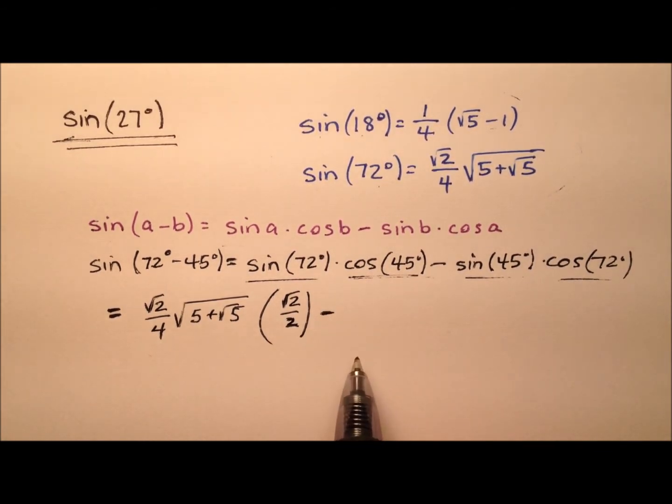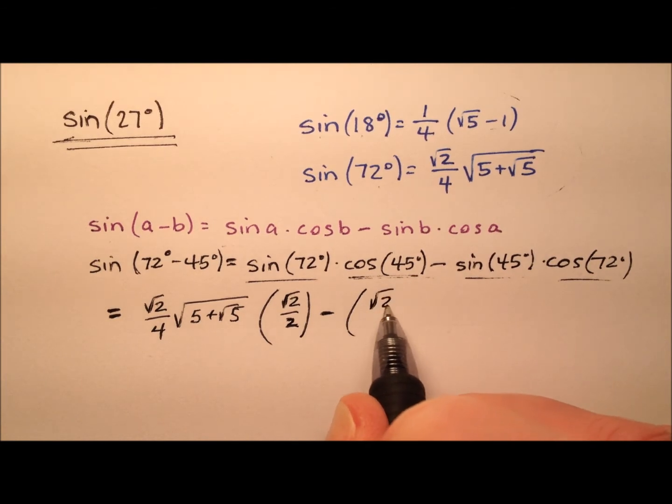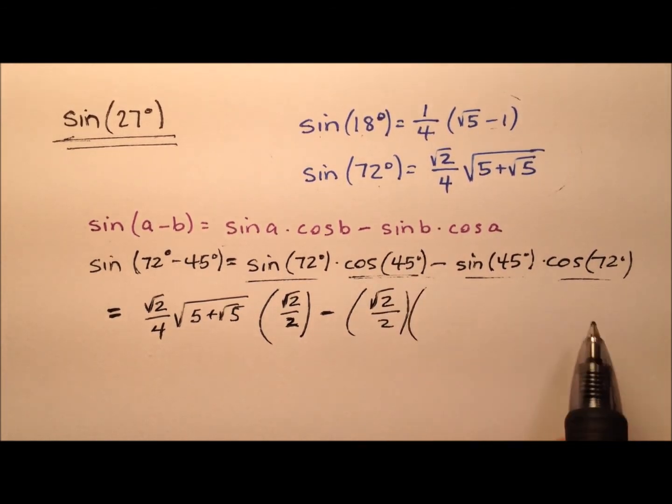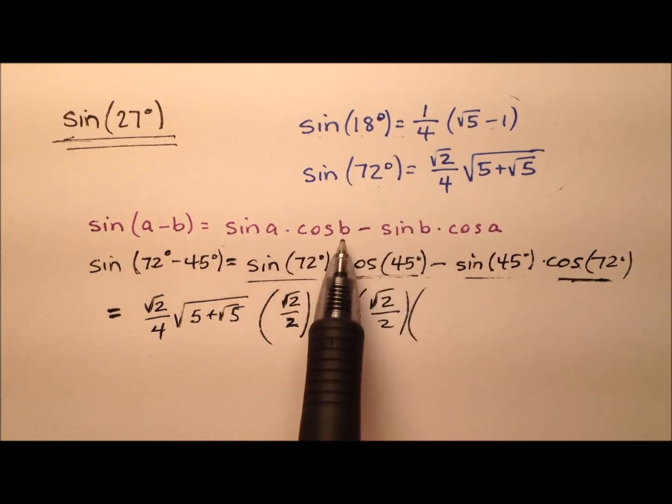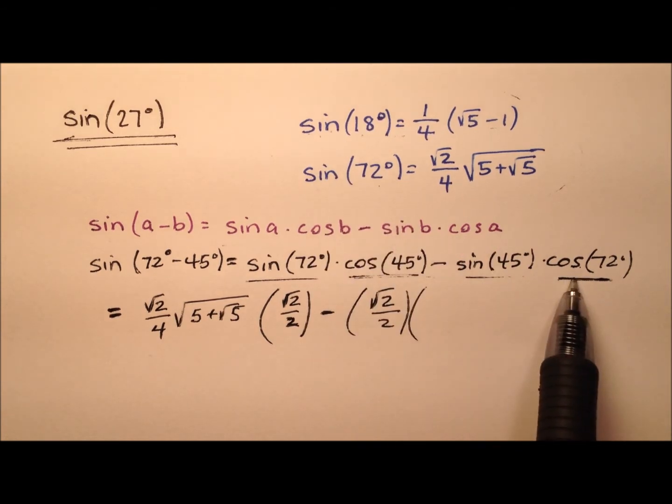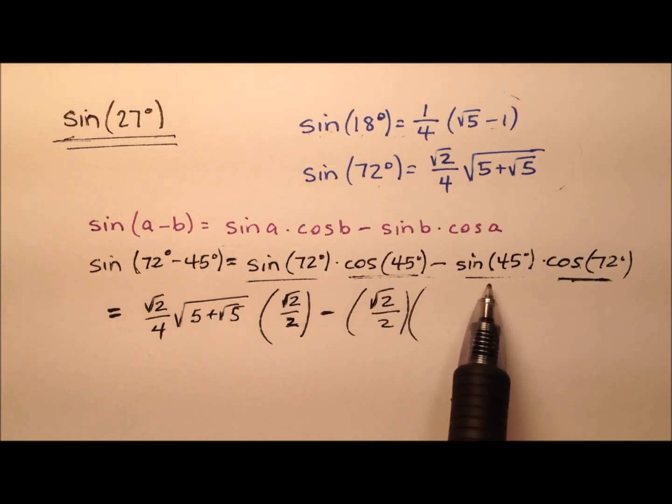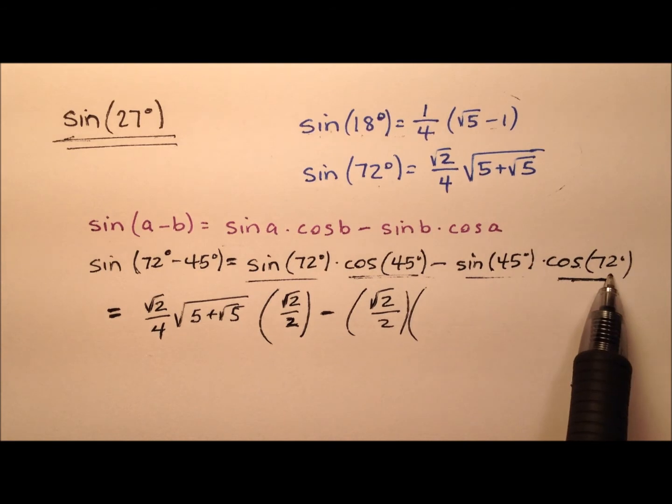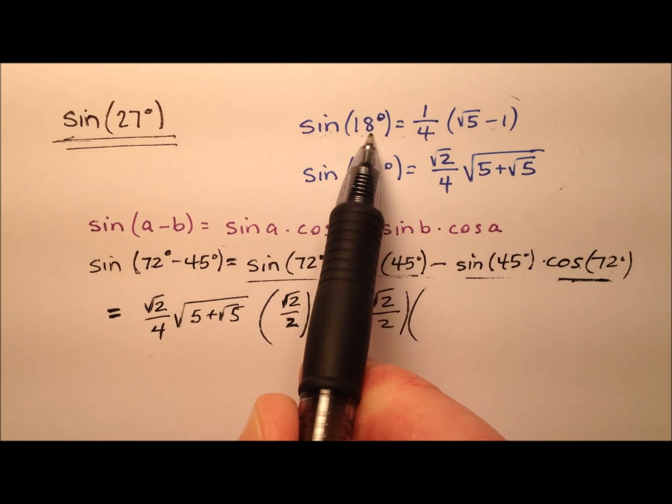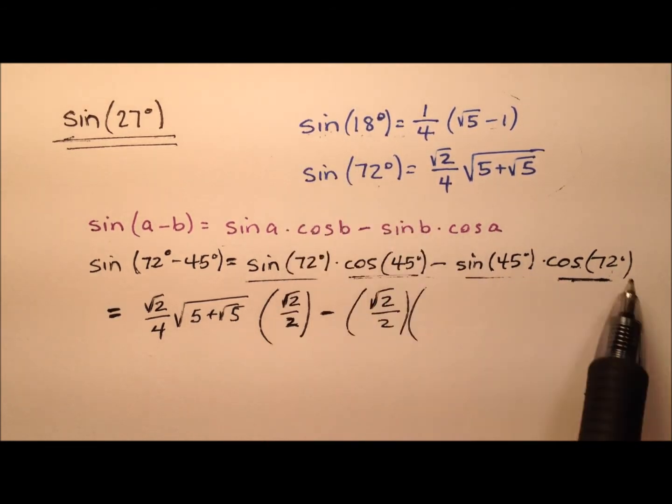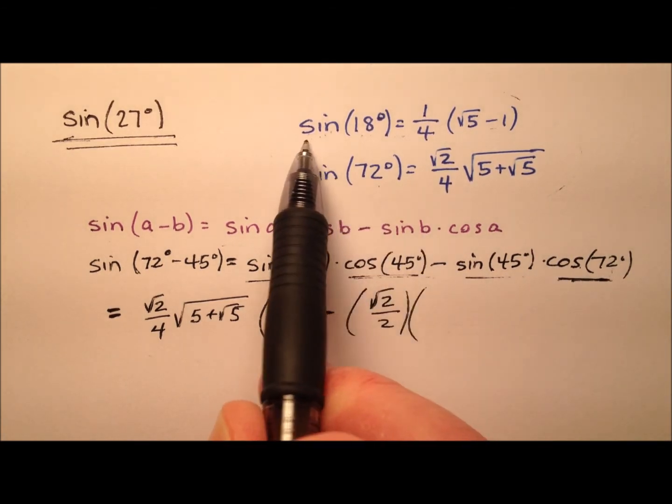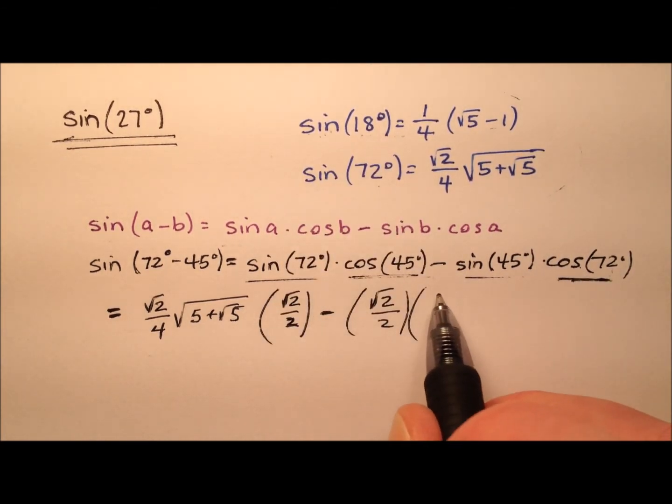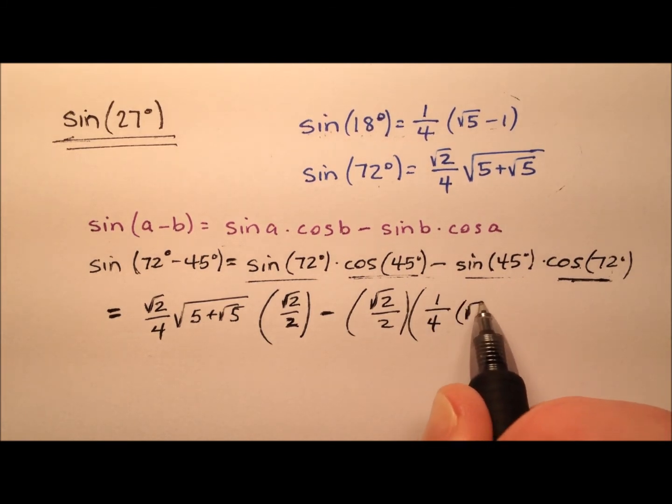From that product, we're going to subtract the sine of 45, which is also the square root of 2 over 2, times the cosine of 72. But notice I don't have the cosine of 72 up here. Since 18 and 72 are complementary angles, the cosine of one and the sine of the other are equal in value. So I can exchange the cosine of 72 for the sine of 18, which is a value I found in another video.